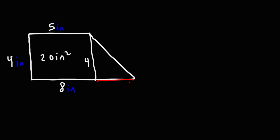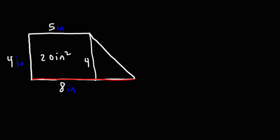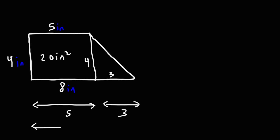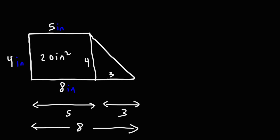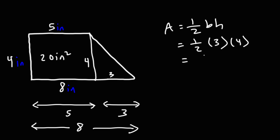What about the length of the base of the triangle? We know that this segment is 8 inches and this segment is 5. The difference between these two numbers gives us the length of the base: 8 minus 5, which is 3. Visually, this part is 5 and this part is 3, giving a total length of 8. The area of the triangle is one half base times height — base is 3, height is 4. 3 times 4 is 12, and half of 12 is 6. So the area of the triangle is 6 square inches.